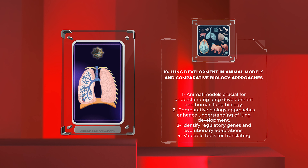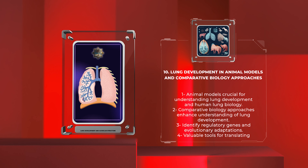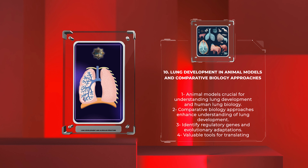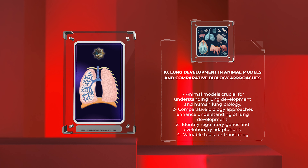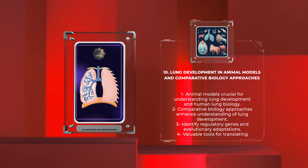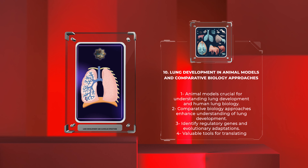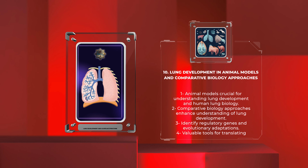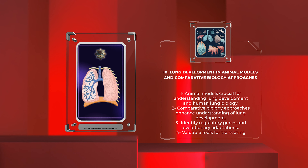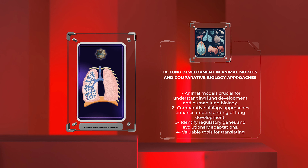Comparative biology approaches, which involve comparing the lungs of different species, further enhance our understanding of lung development. By studying different lung architectures and developmental strategies across species, researchers can identify key regulatory genes and evolutionary adaptations that have shaped and optimized lung function throughout evolution.